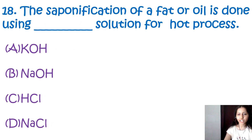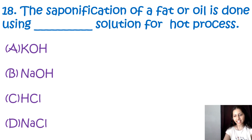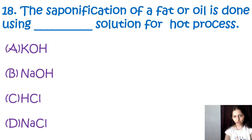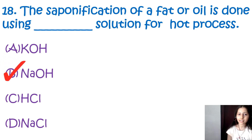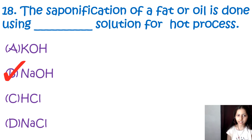Question number 18: The saponification of a fat or oil is done using which solution for the hot process? Options are potassium hydroxide, sodium hydroxide, hydrochloric acid, and sodium chloride. The correct option is B, sodium hydroxide. Sodium hydroxide is a strong alkali solution that reacts with fats and oils in the presence of heat to produce soaps and glycerol. Saponification of a fat or oil is done using sodium hydroxide solution for the hot process.